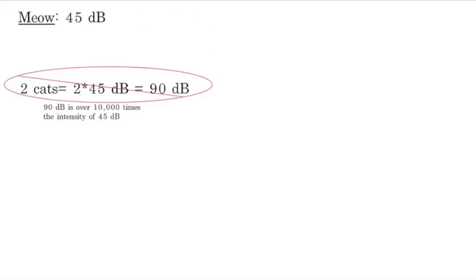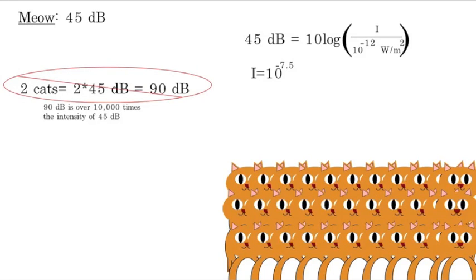Instead, we have to use that formula, we get our intensity again, and then now let's say we have 30 cats, they're at a cat shelter or something, and they're all going crazy. Well then we'll multiply that intensity by 30, and then use our formula, and that would tell us that the sound level would be at about 60 decibels, which is louder.